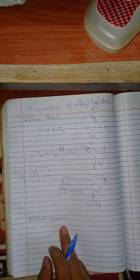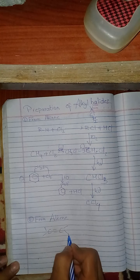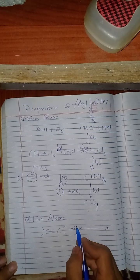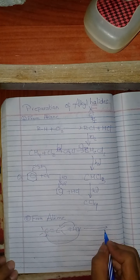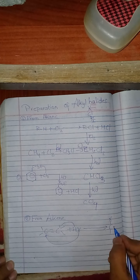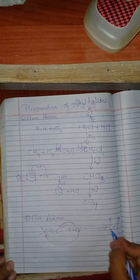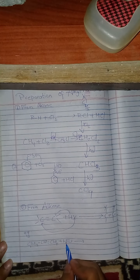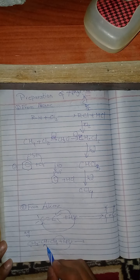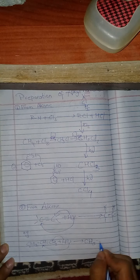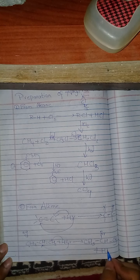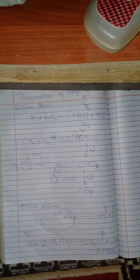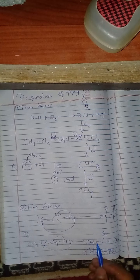Now we are going to study the preparation of alkyl halide from alkene. We can get alkyl halide from alkene by adding HX. For example, if we have carbon double bond carbon and HX, then hydrogen goes and sits on one carbon and X goes on the other carbon. In this case, hydrogen attaches to one carbon and bromine attaches to the other, giving 2-bromopropane.